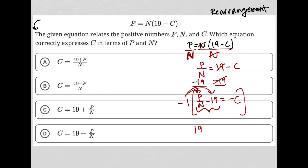And then, of course, that equals positive C. So that is the answer. Therefore, choice D—C equals 19 minus P over N—is correct. That's the answer.